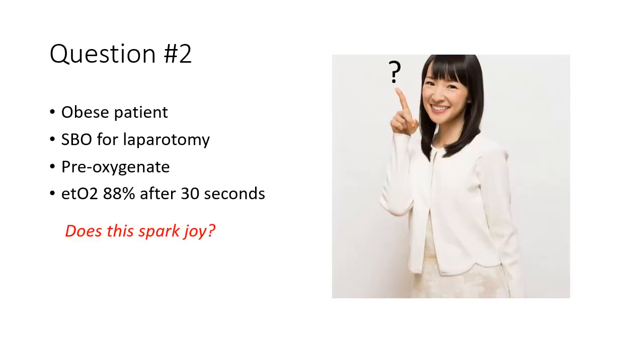It's Saturday evening. You have an obese patient undergoing a laparotomy for a small bowel obstruction. You apply the oxygen mask and about half a minute later, the patient is very well pre-oxygenated. Does that fill you with joy? Well, the answer is it shouldn't. What happens next is that your patient desaturates to 80% during your rapid sequence induction prior to you getting the tube in, despite the fact that you are lightning fast at intubating. What's going on here?